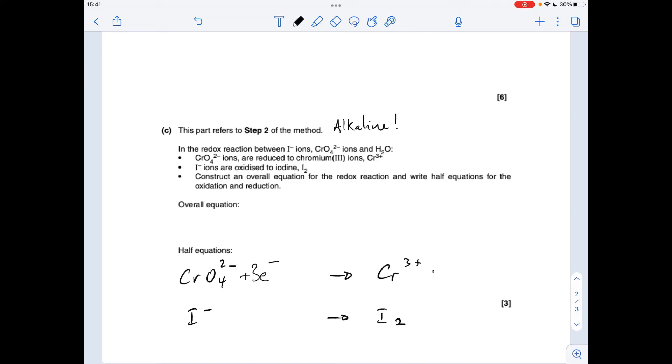So I need eight hydroxide ions on the right. All I need to do now is sort out the remaining atoms, so you can see we've got eight H's on the right, we've got none on the left, so four H₂O's and that's that one sorted.